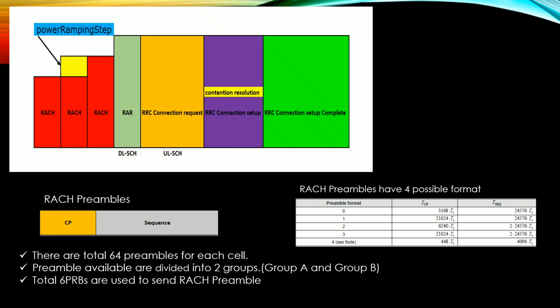We have two groups: group A and group B. The number of preambles in group B will be decided based on the total number of RA preambles minus the size of RA preambles in group A. There is also one more point: the ZC (Zadoff-Chu) sequences are basically the sequences used for RACH preambles.